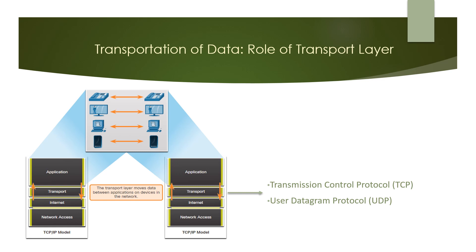The application layer program generates data that must be exchanged between source and destination. The transport layer is responsible for logical communication between applications running on different hosts. This may include services such as establishing a temporary session between two hosts and the reliable transmission of information for an application. The transport layer is the link between the application layer and the lower layers responsible for network transmission.